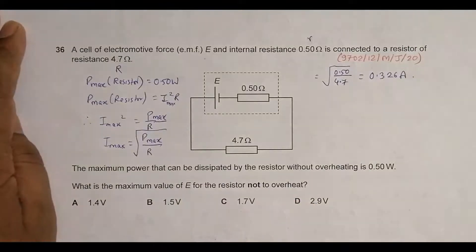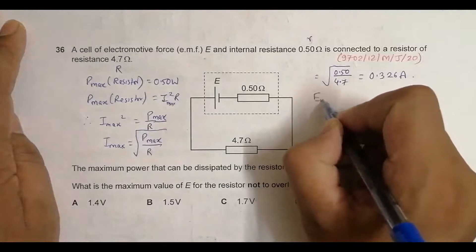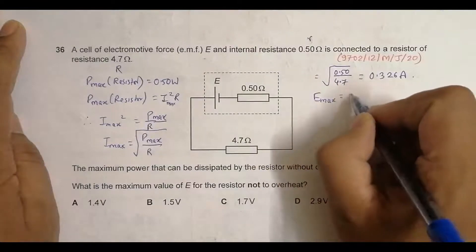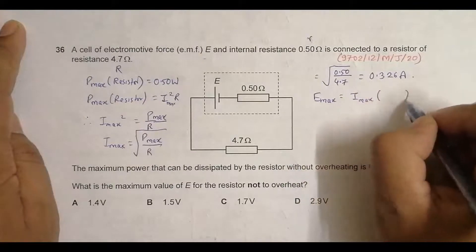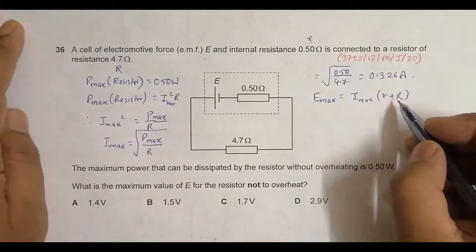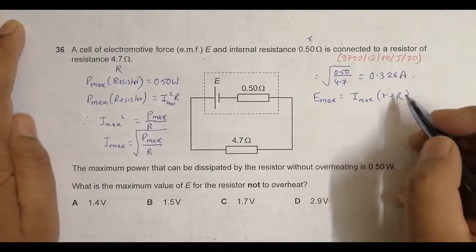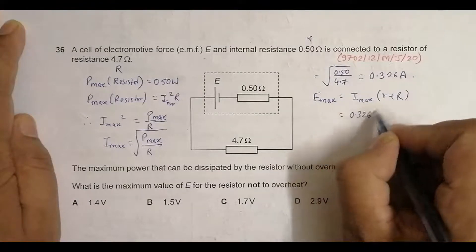Now we have to find the maximum value of EMF. E_max should equal I_max times the total resistance of the circuit, which is r plus R. r is the internal resistance and R is the external resistance. So it's equal to 0.326.